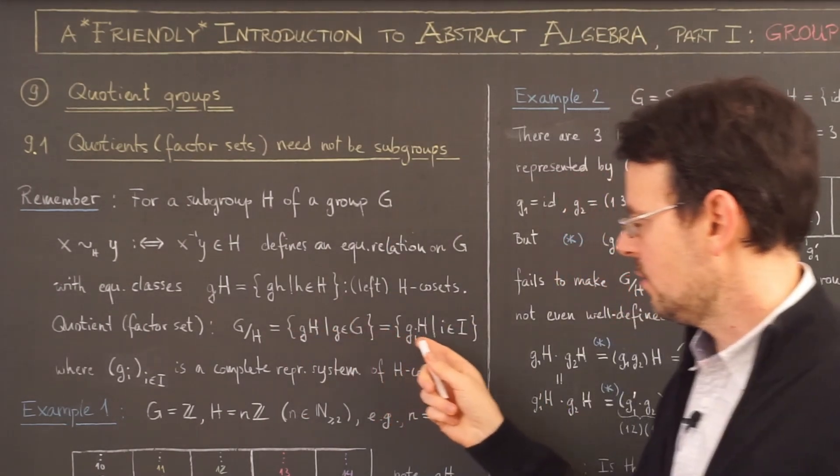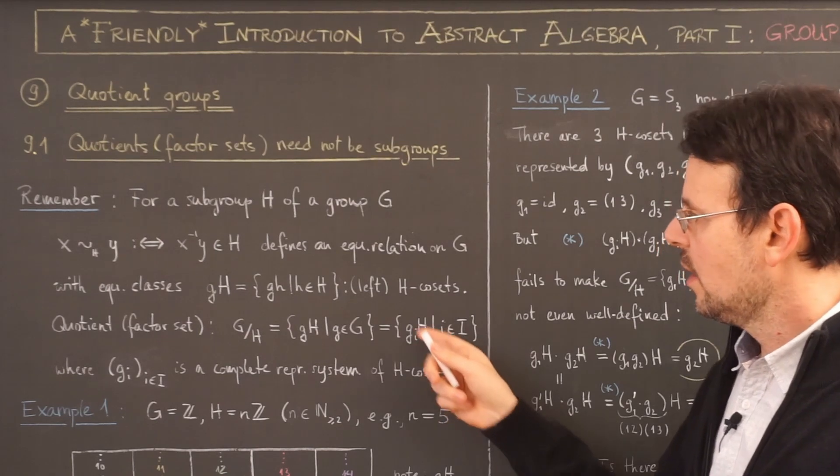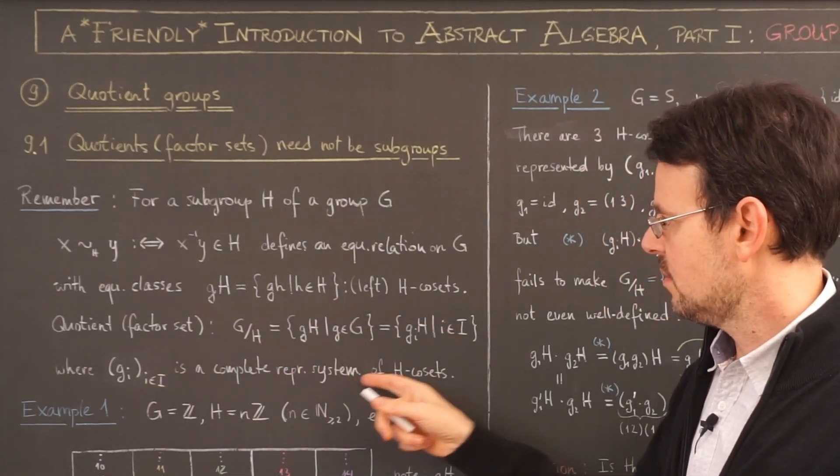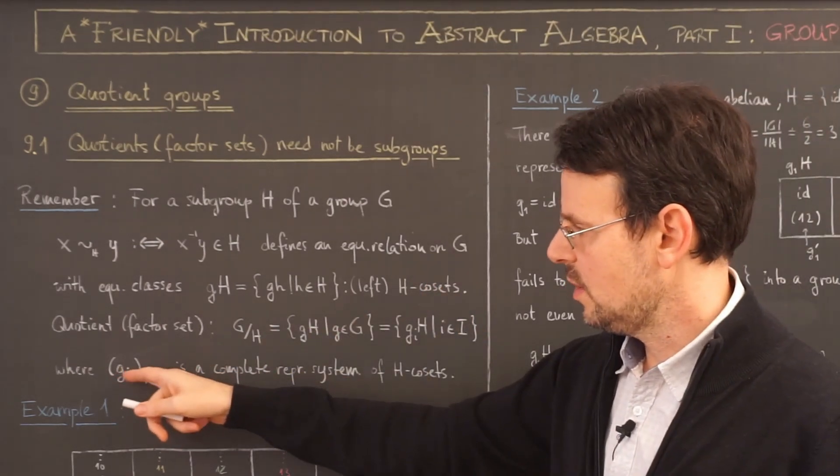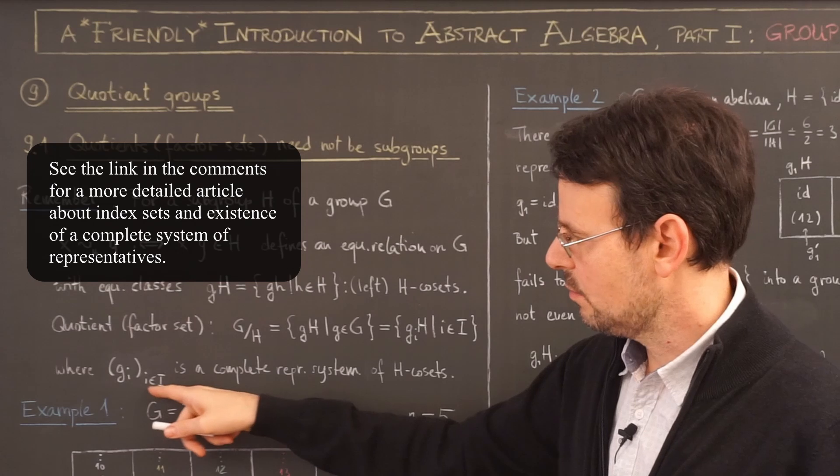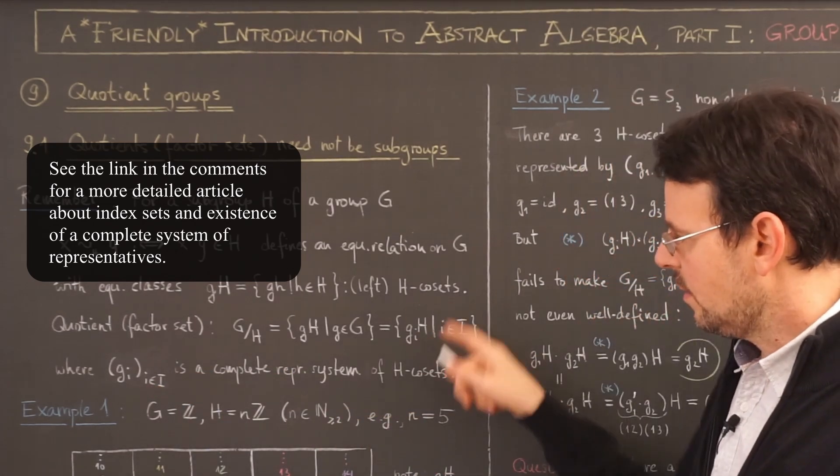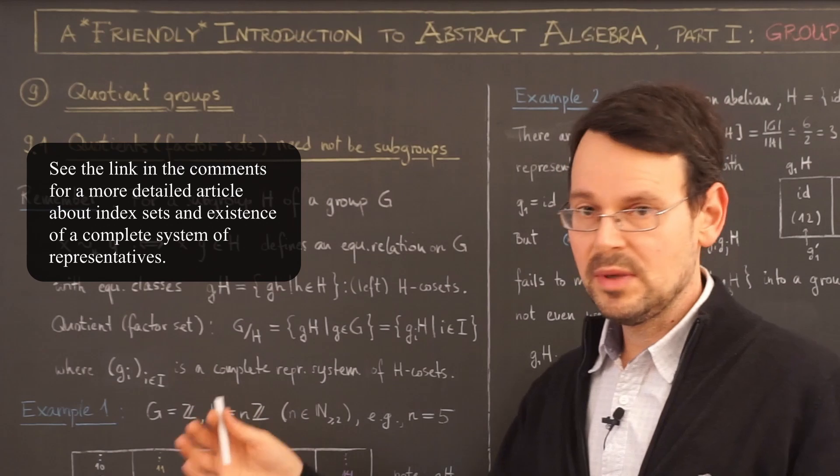A more convenient way to write this is we take a complete representative system of these H cosets, denoted here g sub i, i running through some index set capital I. In this way, we avoid any ambiguity.